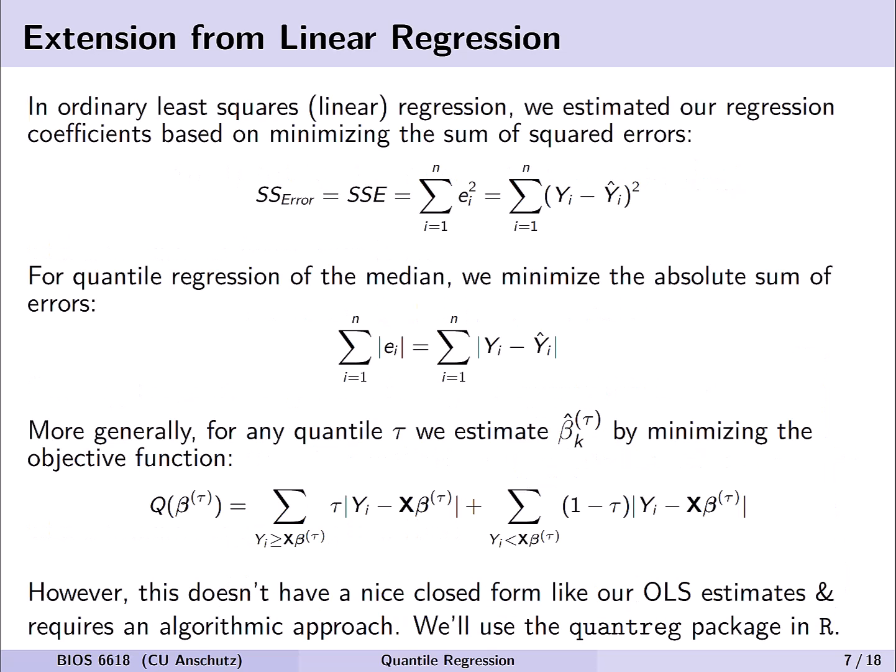Now we also have to think about how we would actually estimate these beta coefficients in quantile regression. So we know that in ordinary least squares linear regression, we estimated our regression coefficients based off of a minimization of the sum of squared errors. And so we can see here just a reminder of what that looked like from our earlier lecture where we take that sum of our residuals essentially, the observed Yᵢ minus our predicted ŷᵢ and sum up over every one of those squared values.